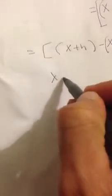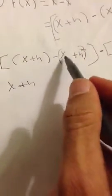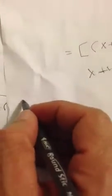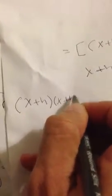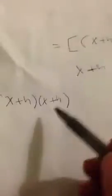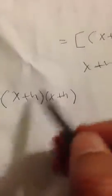Now let's simplify. We have (x+h) squared, which is another way of writing (x+h) times (x+h). I'm going to do it a different way. If you don't know this method, you can do it the long way and distribute everything by the negative sign.